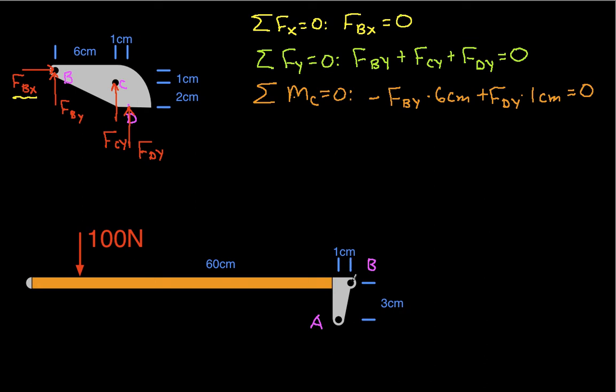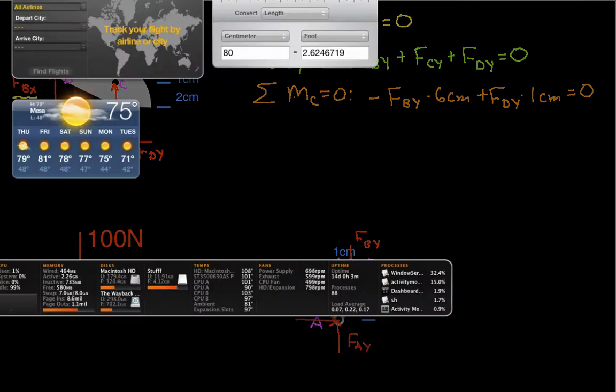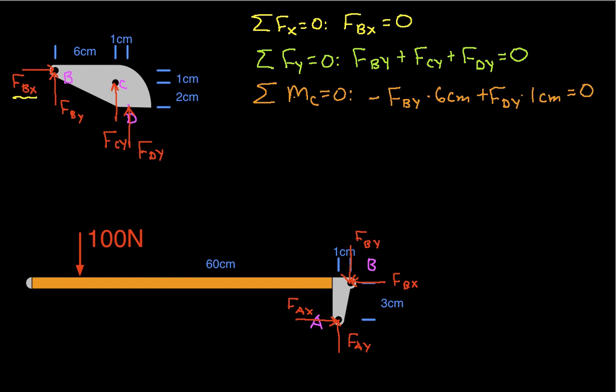We know that because we have the same reaction force at this point as we do here, the force of the handle acting on the blade we've represented this way, up and to the right, which means that the force of the blade acting on the handle will be in the opposite direction, which would be down and to the left. So it'll have the same magnitude, FBY and FBX. And we'll also have a force at A, FAY and FAX. And then we've got our force here of 100 newtons.